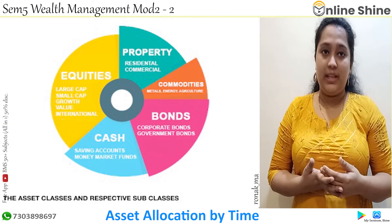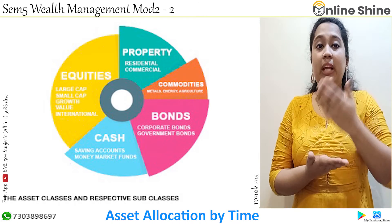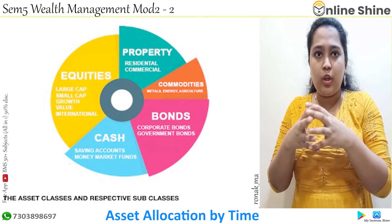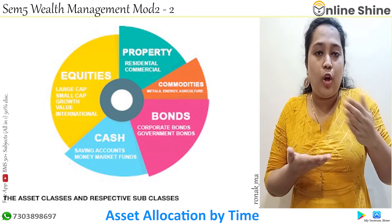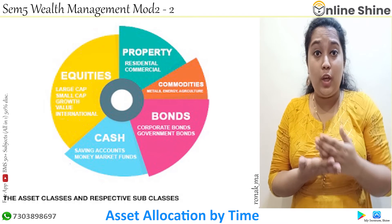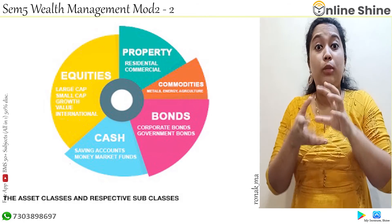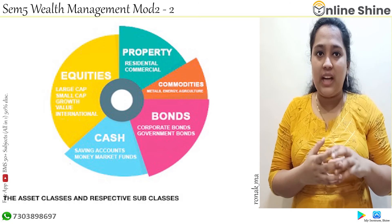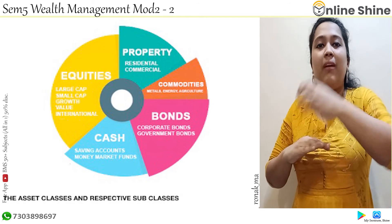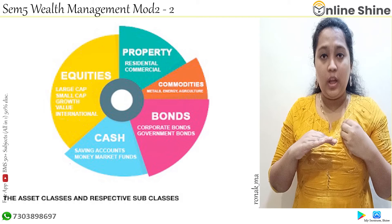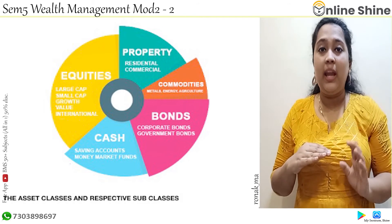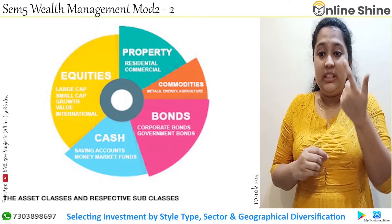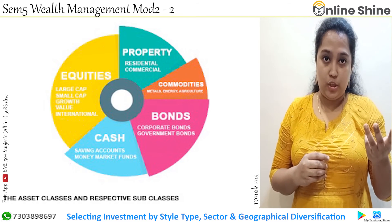The next one is asset allocation by time. This says the market is not fixed — it keeps on changing. So the assets which you allocate should be monitored properly and rebalanced. If there are changes — for example, if equities in the market are going down — then you should disinvest from there. So your asset allocation should also be done and adjusted by time.